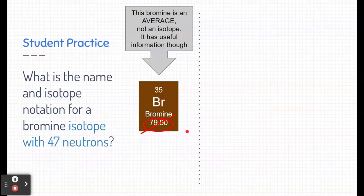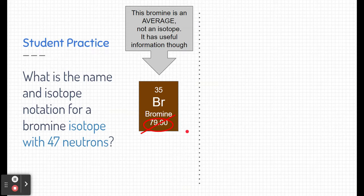We're not talking about the average bromine. We're talking about a very specific isotope of bromine. So, we can't rely on the mass here. We got to kind of figure it out ourselves.